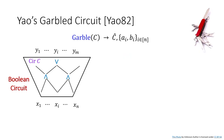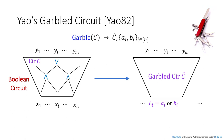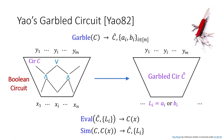Let's start by recalling the classical Yao's garbling for Boolean circuits. Given a Boolean circuit C, the garbler computes some garbled C-hat, plus N pairs of input keys A and Bi. We encode each input bit into a label Li by selecting one of the keys according to the bit. The evaluator, given C-hat and the input labels, is able to compute C of X, and security requires that this is the only thing the evaluator learns.